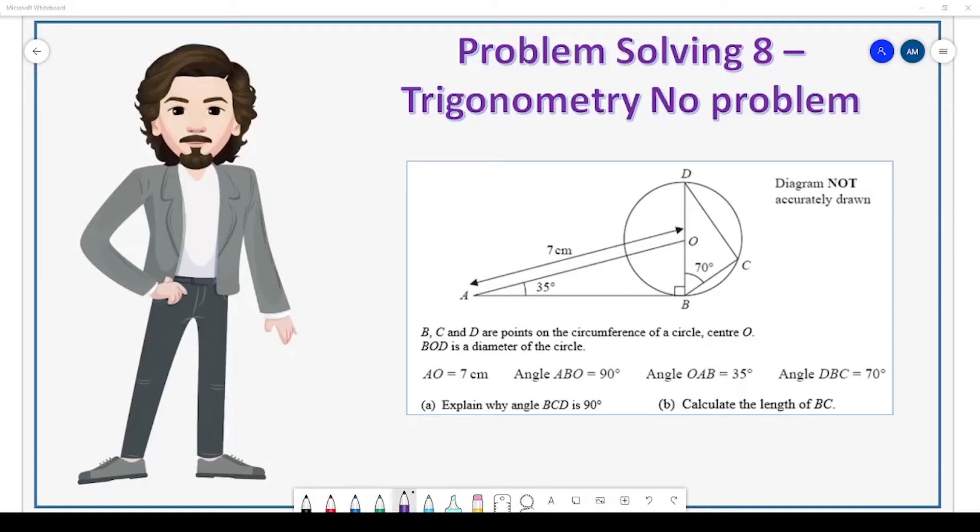Problem solving 8. We have a circle where B, C, and D are points on the circumference of a circle, center O. BOD is the diameter of the circle. AO equals 7 centimeters. Angle ABO equals 90 degrees. Angle OAB equals 35 degrees. Angle DBC equals 70 degrees. Part A: explain why angle BCD is 90 degrees. Part B: calculate the length of BC.